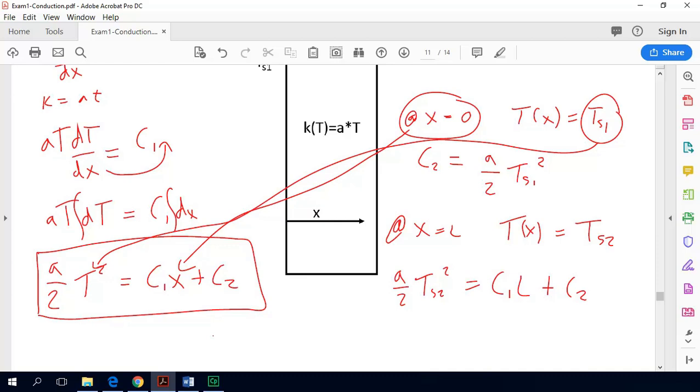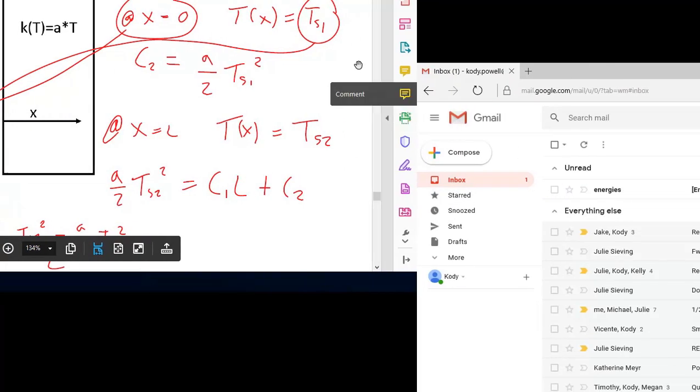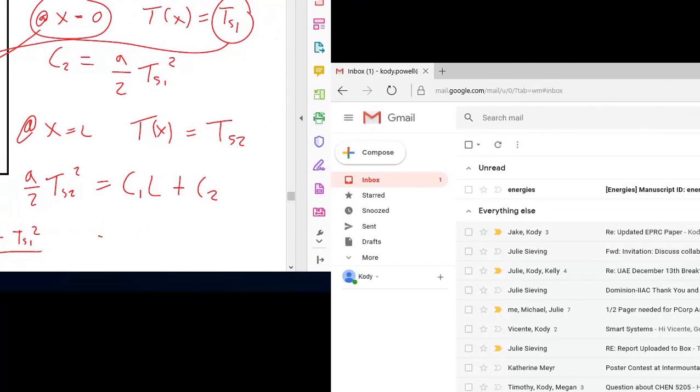So doing a little bit of algebra we get c1 is equal to a over 2 times Ts2 squared minus c2 which is a over 2 times Ts1 squared. And we need to divide that whole thing by L. So that's just taking this equation and rearranging it and then substituting in this for c2. So we can still do a little bit better on simplifying here. So here we get that c1 is equal to a over 2L multiplied by Ts2 squared minus Ts1 squared.